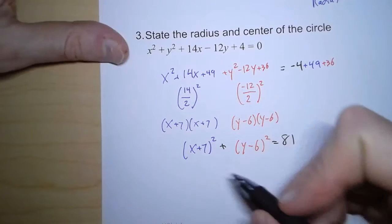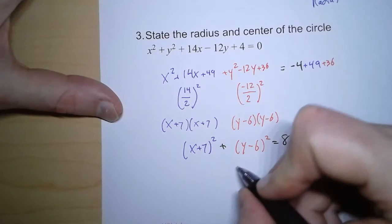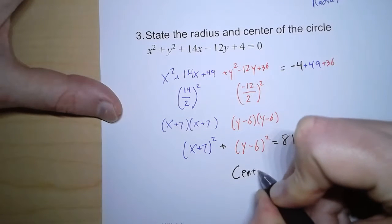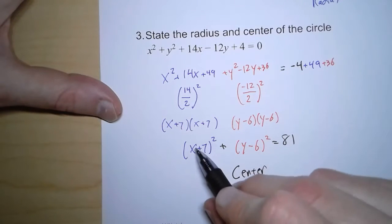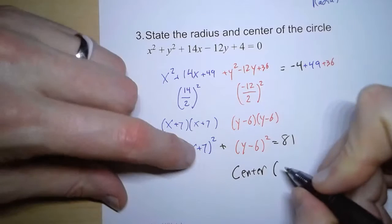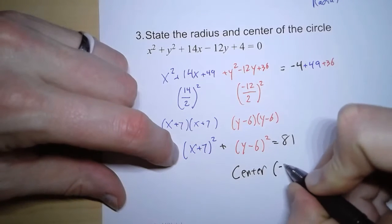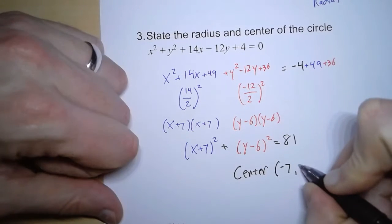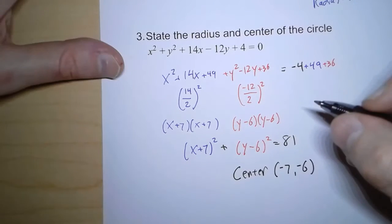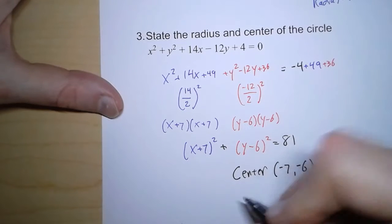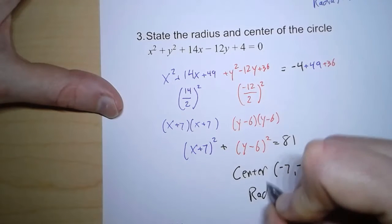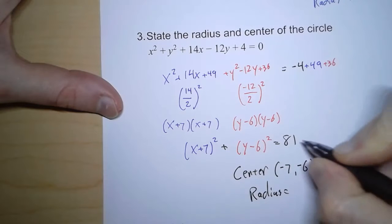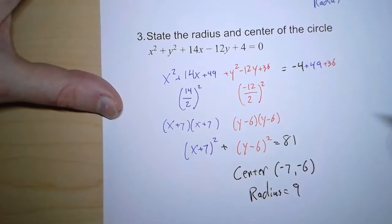And I get a value of 81. So now, now that I've written this in a form we're familiar with, we can write the center of our circle. And normally it's at 0, but the plus 7 moves it to the left, 7 spaces, and the minus 6 moves it down, 6 spaces. So our center is at negative 7, negative 6. And our radius is at the square root of 81, which is 9.